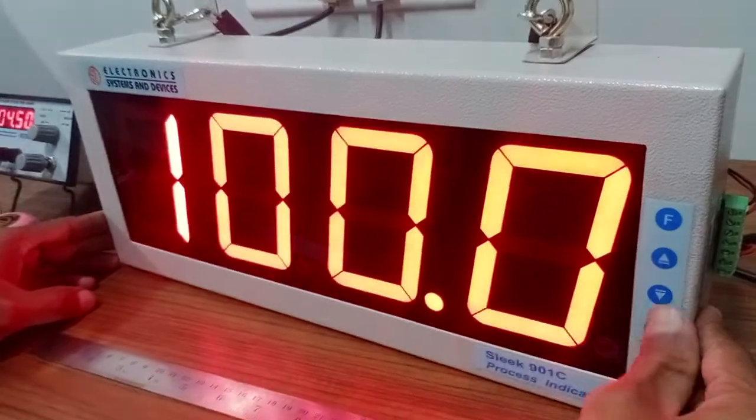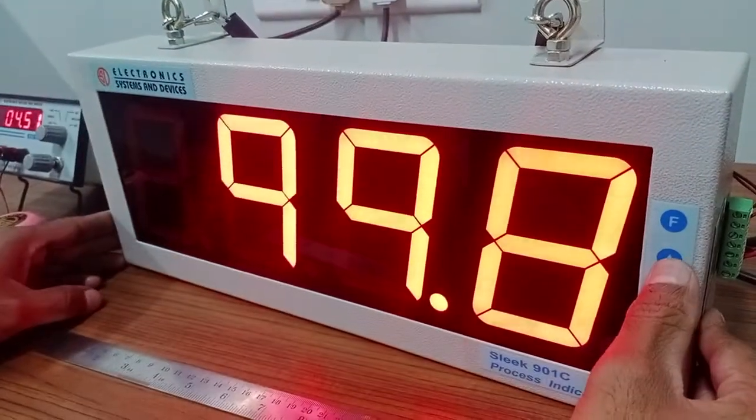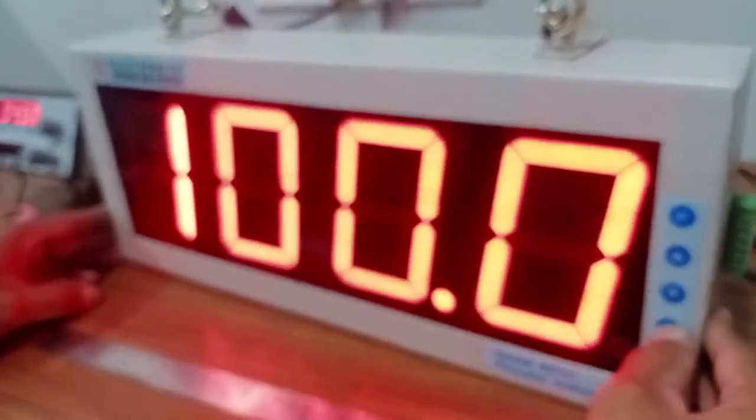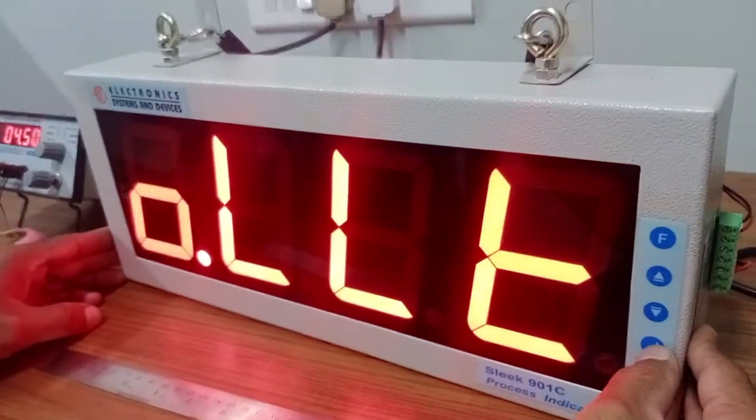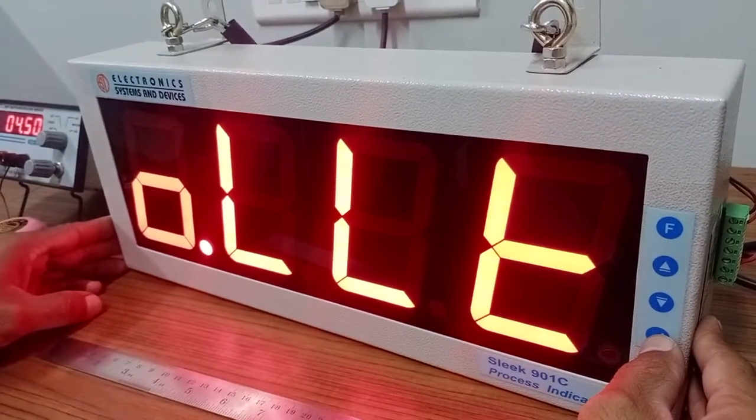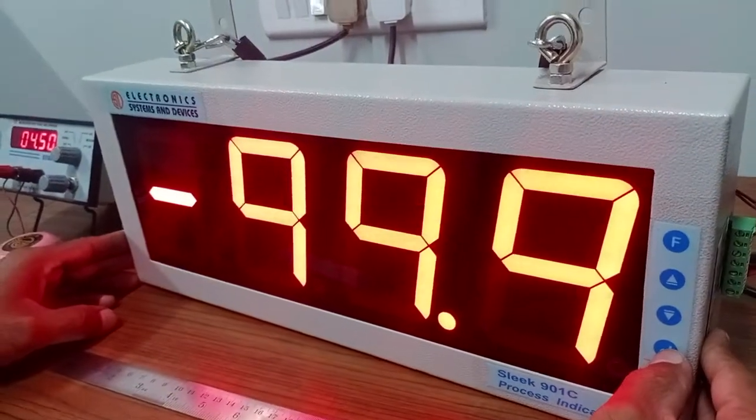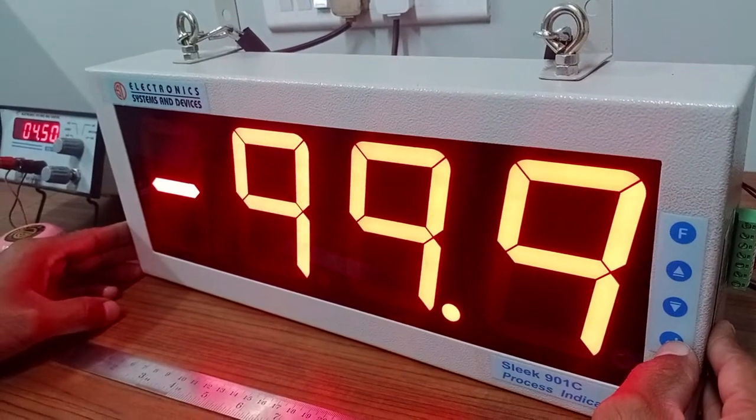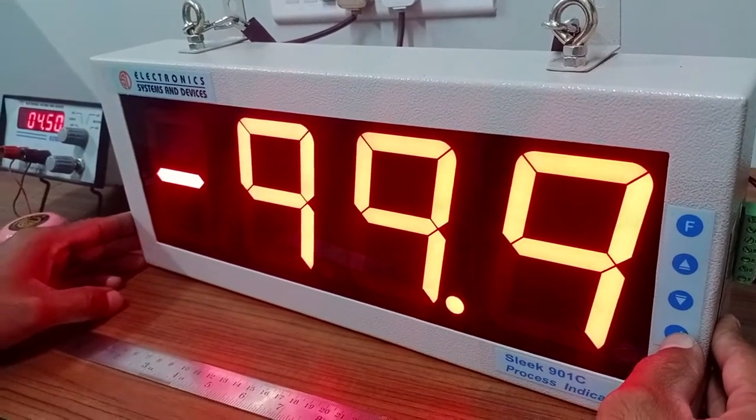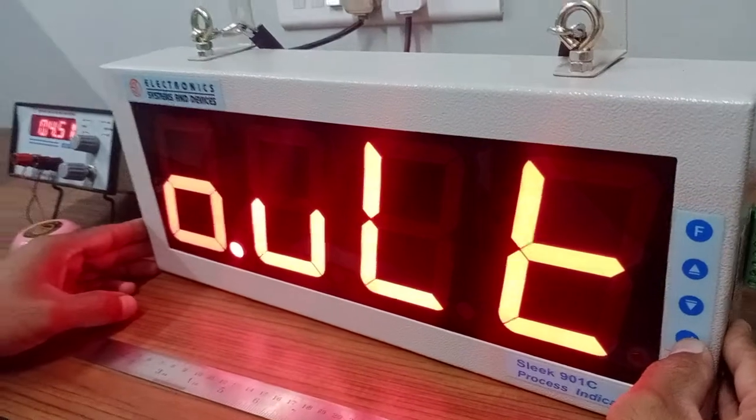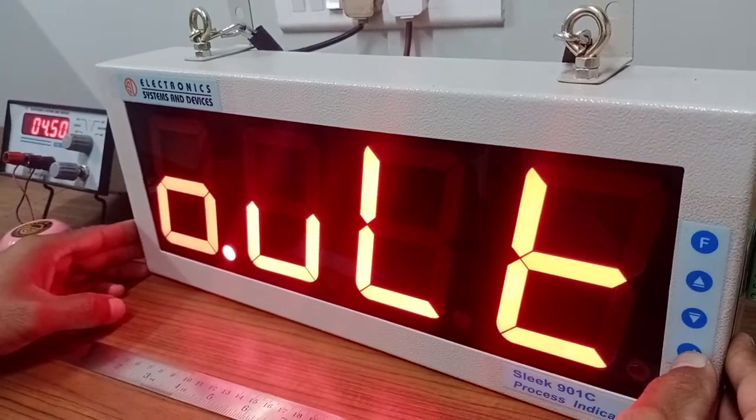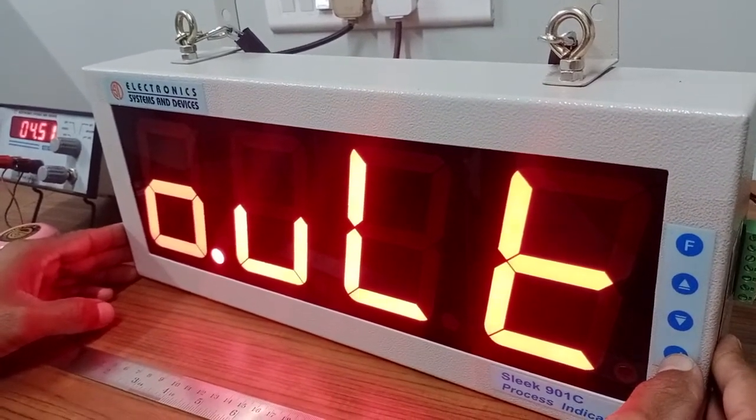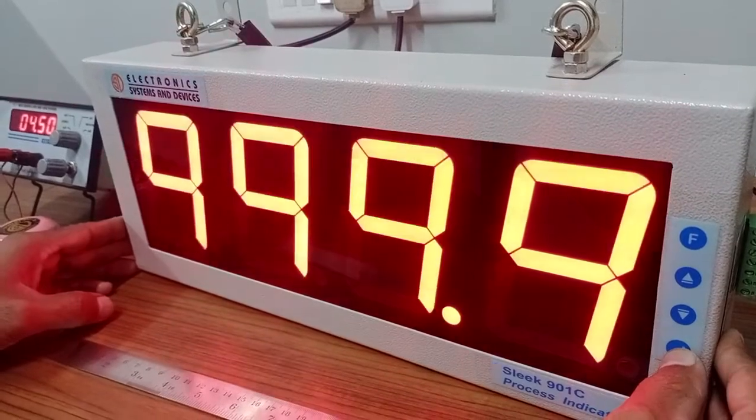Enter. This is output lower limit which is for retransmission output, like 4 to 20 retransmission output. We will skip that because this instrument doesn't have retransmission. This is output upper limit, again for 20 milliampere of retransmission output.